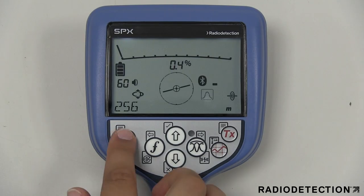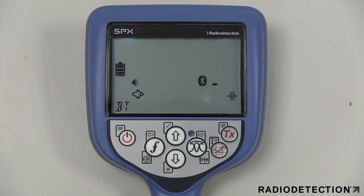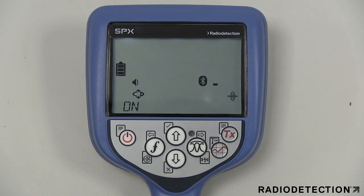The BT menu option allows you to manage the Bluetooth connection between the locator and the TX transmitter and other devices such as PDAs.